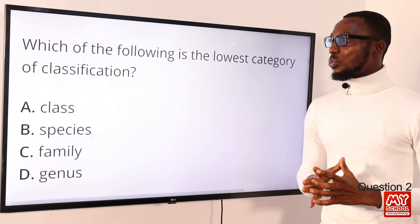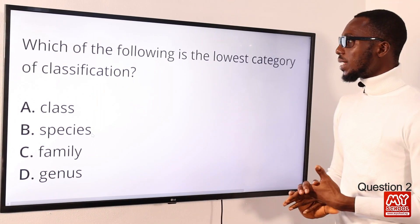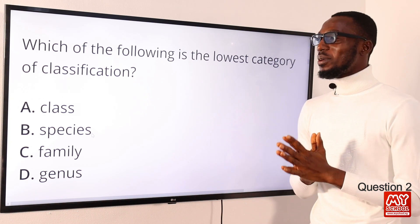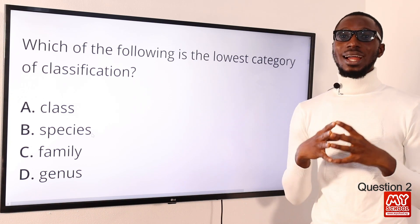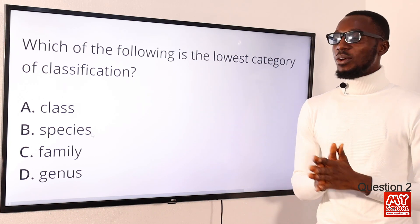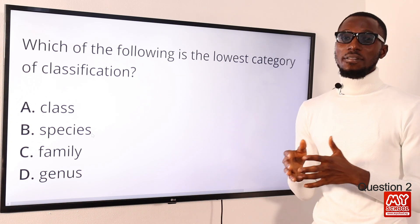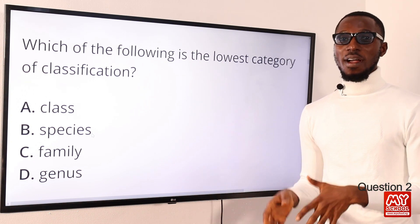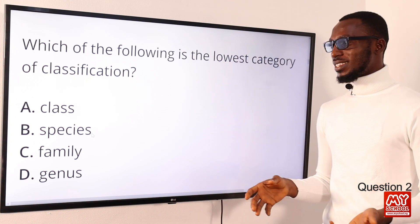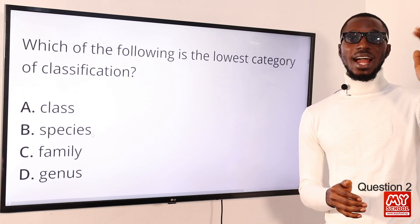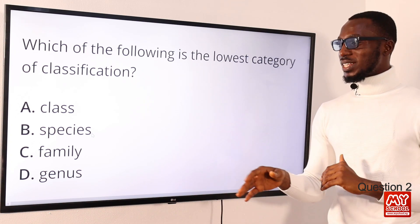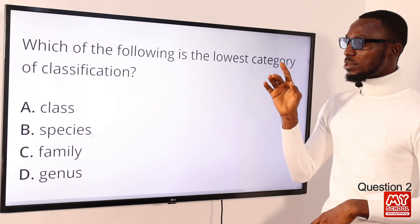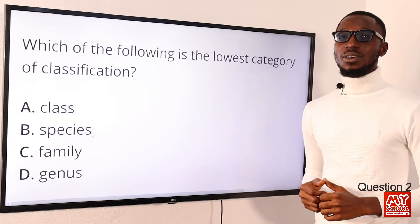Question 2: which of the following is the lowest category of classification? When we look at the hierarchy of living organisms, we talk about kingdom, phylum, class, order, family, genus, and species — from the highest to the lowest classification. The species is the lowest of the classification, so option B is the correct option.